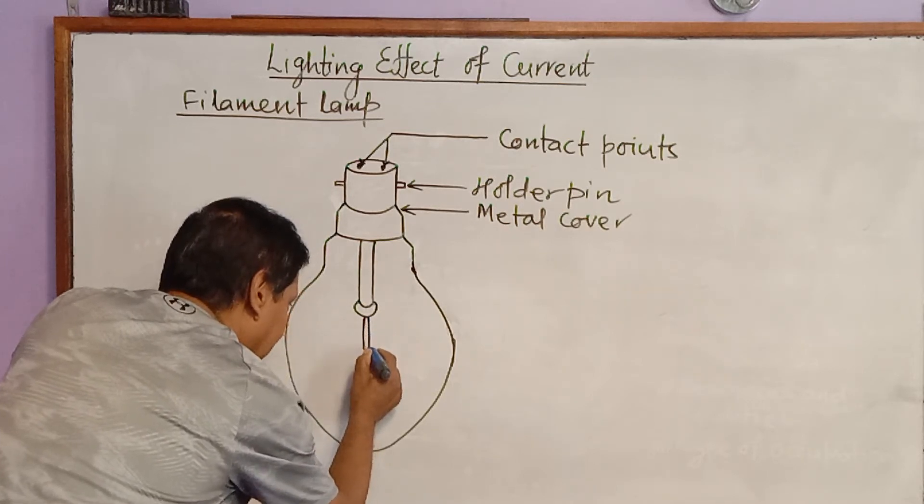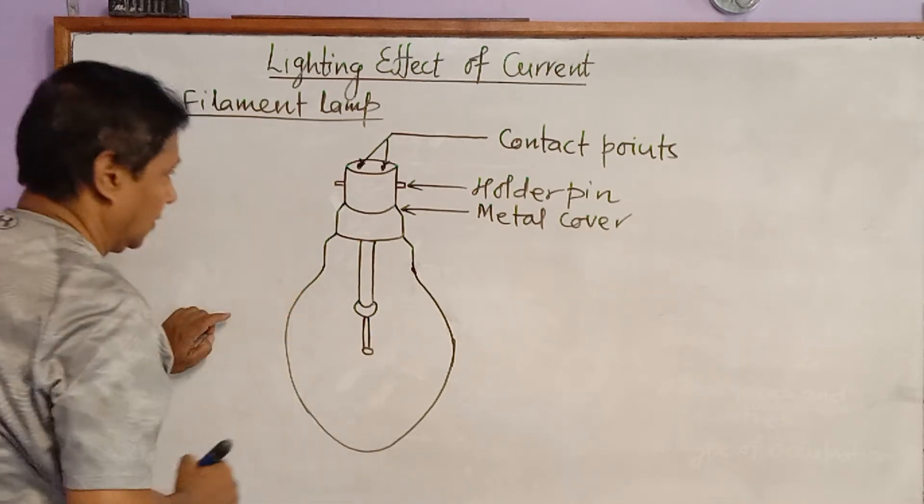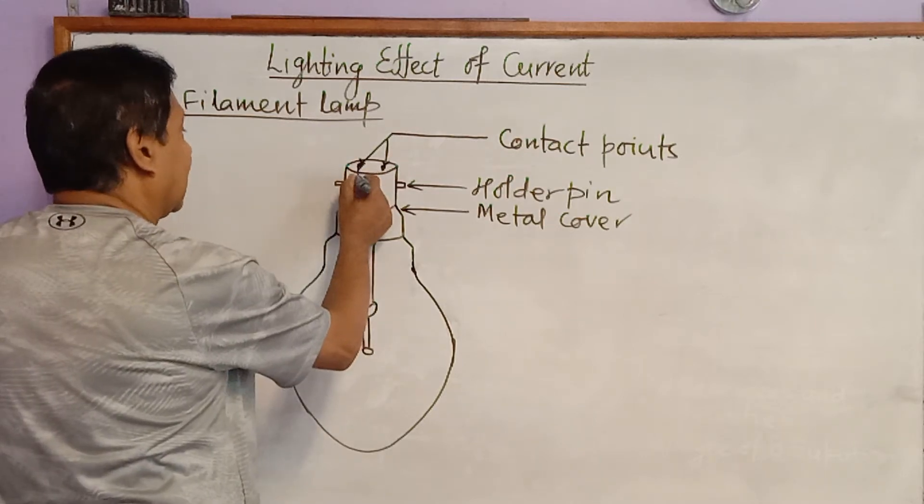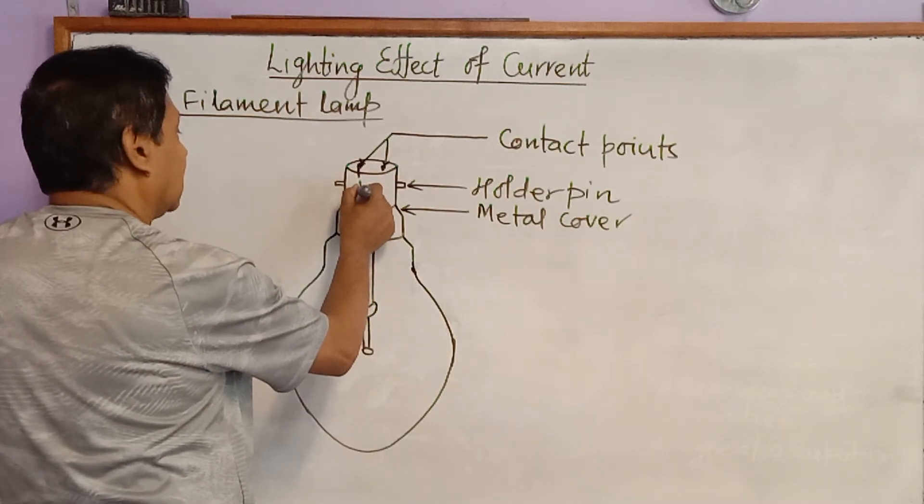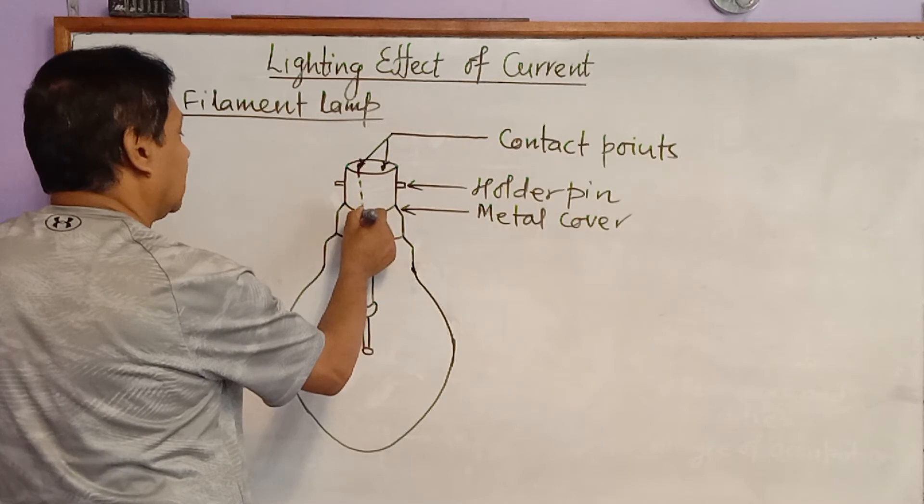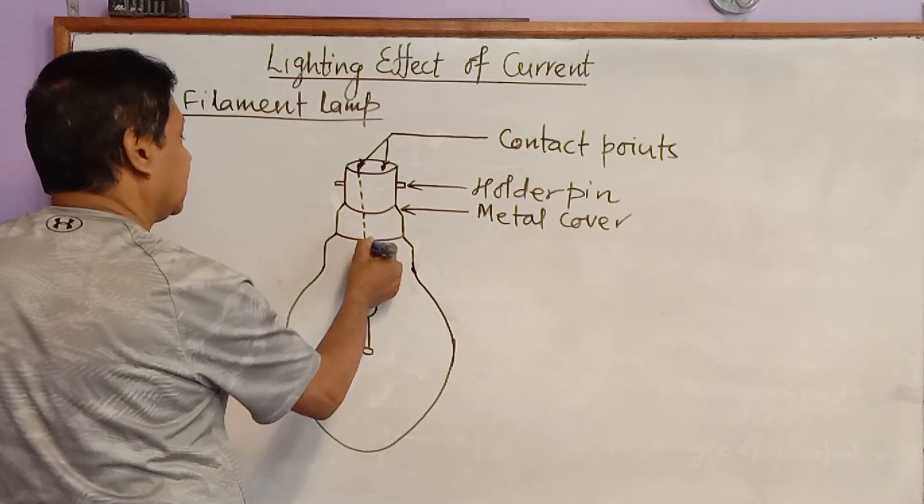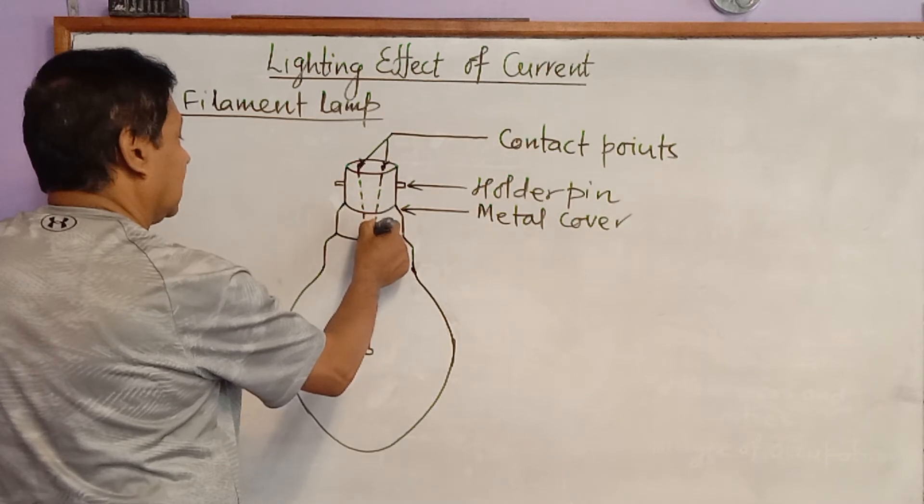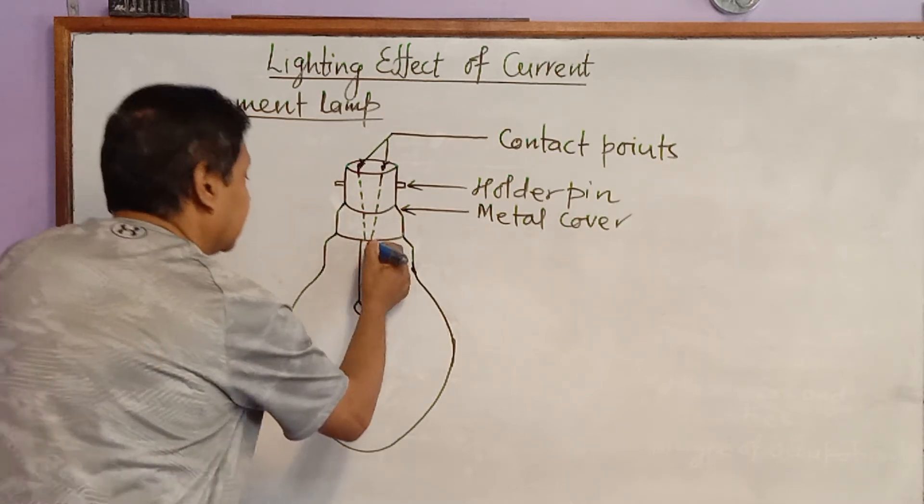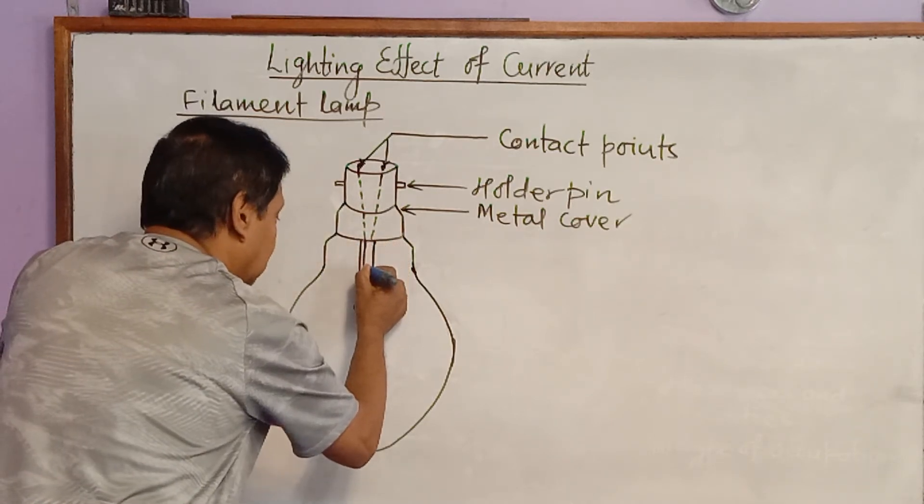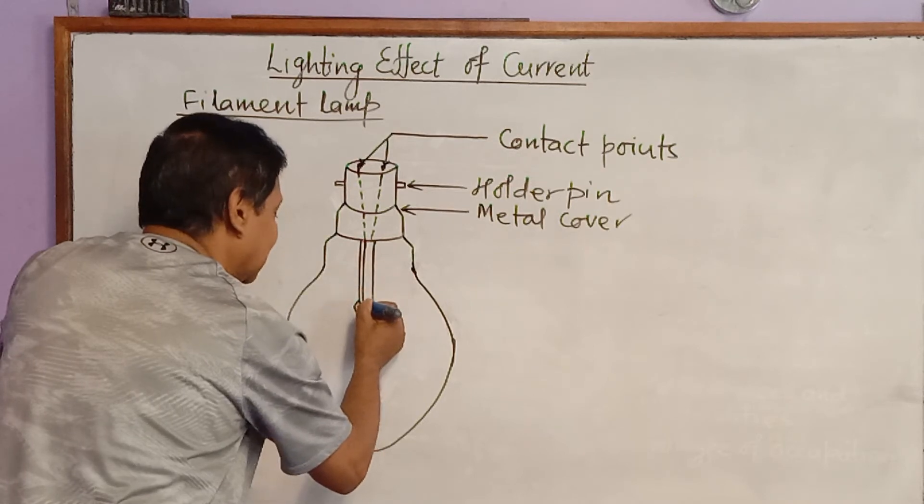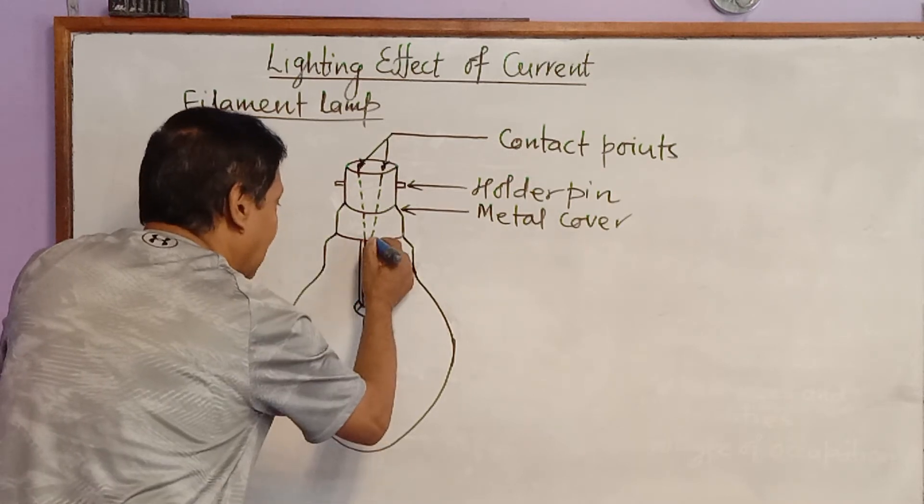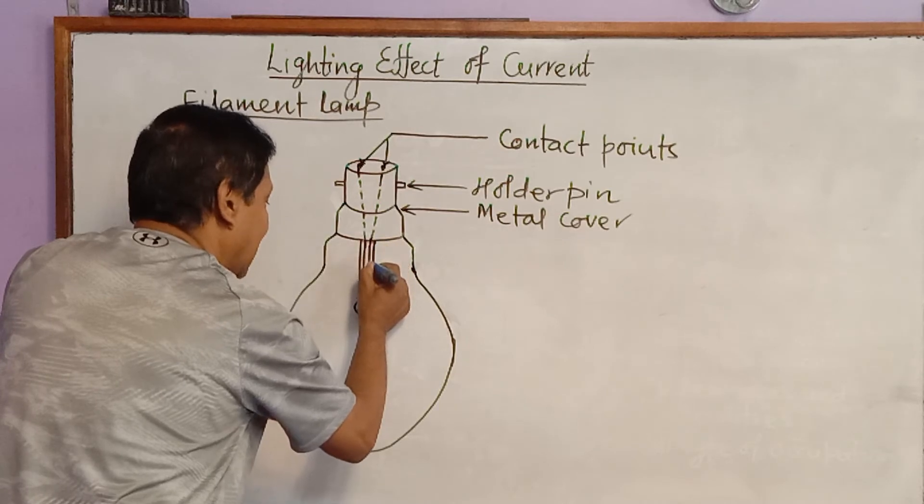Now an electric line comes from one of the contact points and another line from the other contact point. It passes through this thick glass and comes out from the glass.